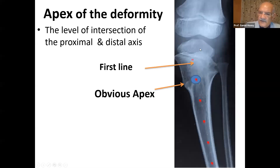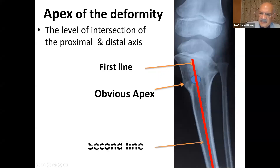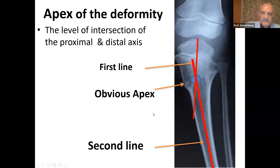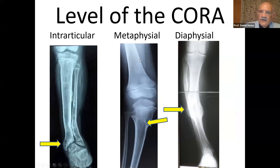We draw a first line. The first line represents the distal segment — it's exactly in the middle of the shaft. Then the second line represents the other segment, and they are going to meet each other in the obvious CORA. In the obvious CORA, it's exactly the real CORA.